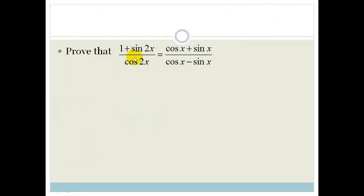It says prove that 1 plus sin 2x over cos 2x is equal to cos x plus sin x over cos x minus sin x.